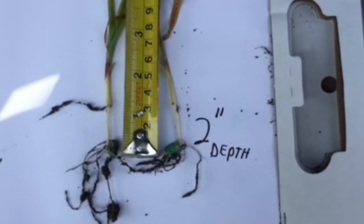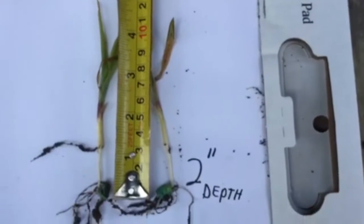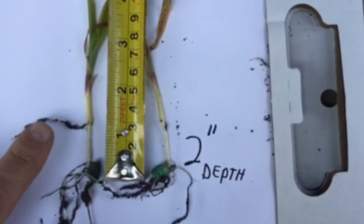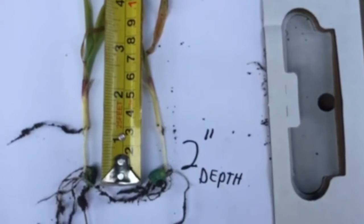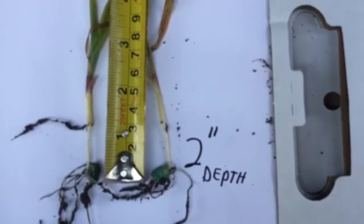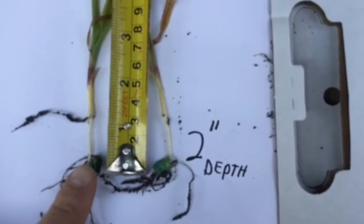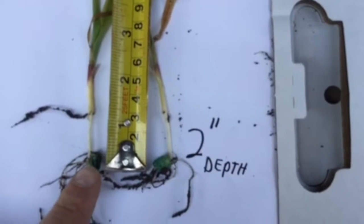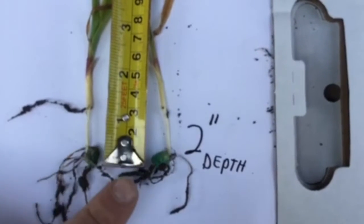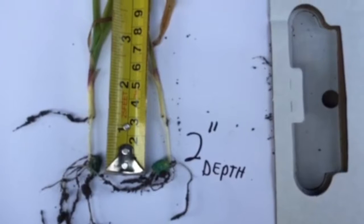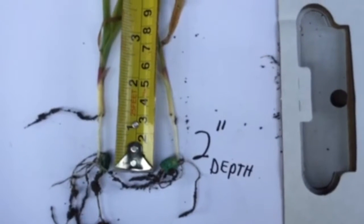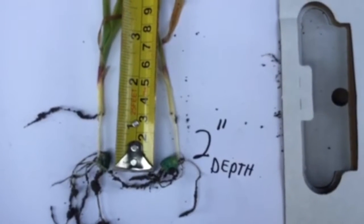This is an example of a two-inch planting depth. If we take a look at these corn plants, you can see the first nodal root coming out. That first nodal root system always comes out three-quarter inches from the soil line. A simple way to take your planting depth is to measure from your seed up to that first nodal root. You can see here we got about an inch and a quarter up to that first nodal root. You add three-quarters of an inch, that gives you the soil line. So we're at about two-inch planting depth here.